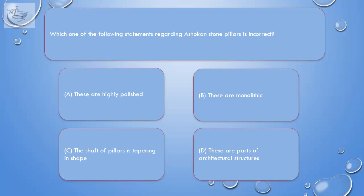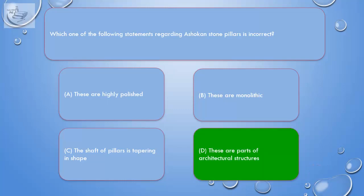Question: Which one of the following statements regarding Ashokan stone pillars is incorrect? A. These are highly polished, B. These are monolithic, C. The shaft of pillars is tapering in shape, D. These are parts of architectural structures. Correct answer is D. These are parts of architectural structures.